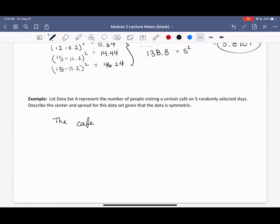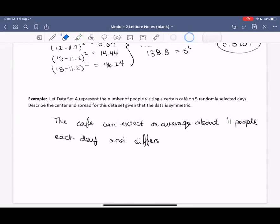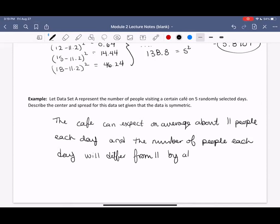We'd have then the cafe can expect on average about 11 people each day. And this average, or the number of people each day, will be expected to differ from 11 by about 6 people.